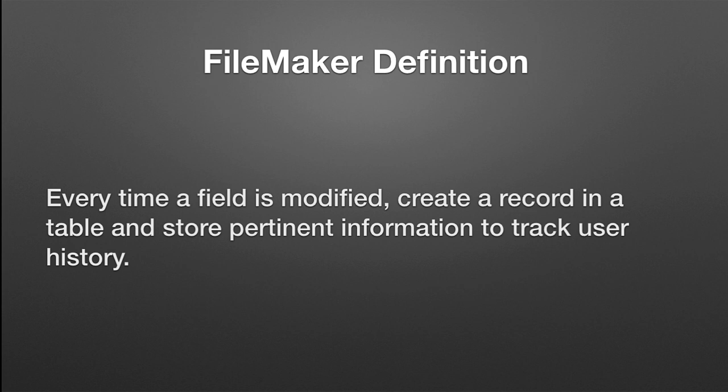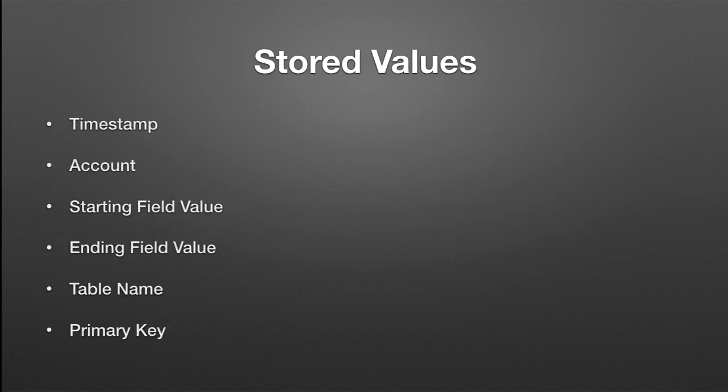Ideally, you want each modification to generate a new record. So if you modify the same field three times, there will be three records in that audit table. What should we store? We want a timestamp — date and time — the account who's logged on and made the change, the starting and ending field values, what table the change was made in, and a primary key from that table so we can connect the audit table back to it.